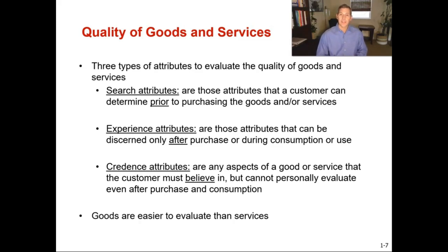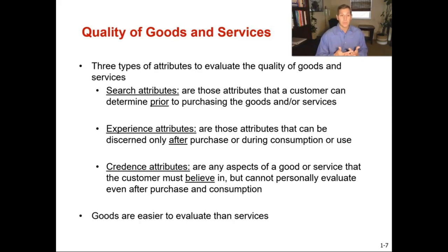When evaluating the quality of goods and services, there are three types of attributes: search attributes, experience attributes, and credence attributes. Search attributes are things a customer can determine prior to purchasing — for example, looking for a rental near San Diego State, you can check number of bedrooms, bathrooms, and square footage before purchasing. Experience attributes are those that can only be discerned after something is consumed or used. For example, I can tell you how wonderful Hawaii is, but unless you go, you won't truly believe me — you can only discern the experience after performing that service.